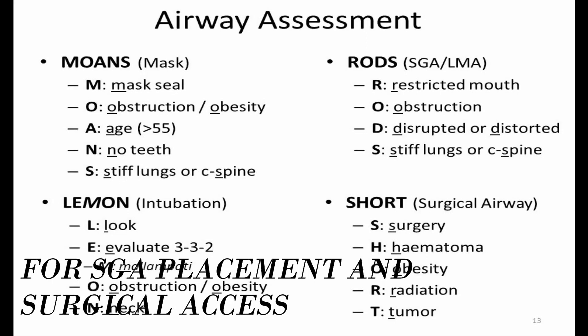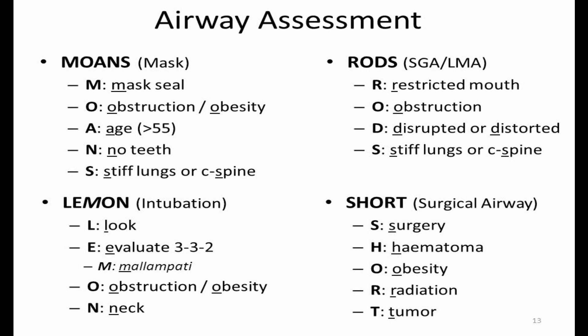Group indices for placement of supraglottic airway devices are given as the mnemonic RODS: Restricted mouth opening, Obstruction of upper airway, Disrupted or distorted airway, and Stiff lungs. The mnemonic for surgical airway access is SHORT: Surgery, presence of Hematoma or bleeding, Obesity, Radiation, and Tumor.